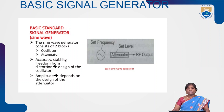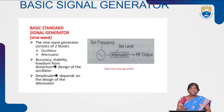A signal generator is mainly used to maintain the frequency in a stable manner, and at the same time to generate different types of signals. With the help of a signal generator we can generate sine wave, square wave, triangular wave, and we can also generate pulse signals and ramp signals. The basic signal generator consists of mainly two blocks: the first one is the oscillator and the second one is the attenuator.